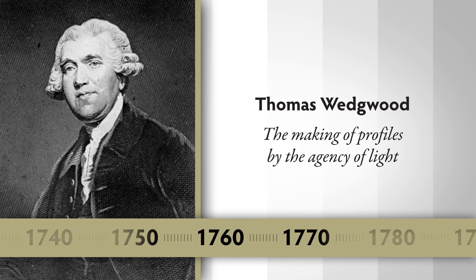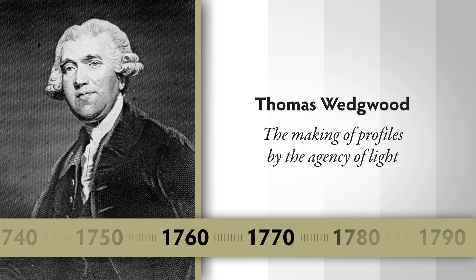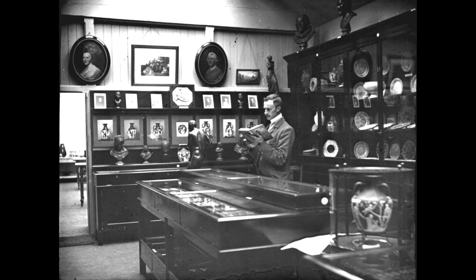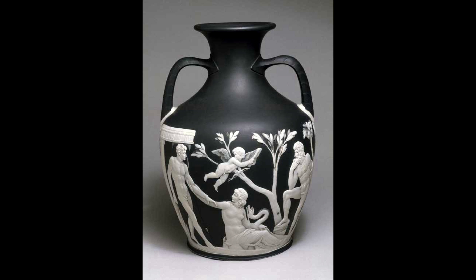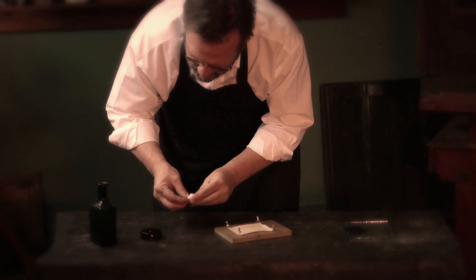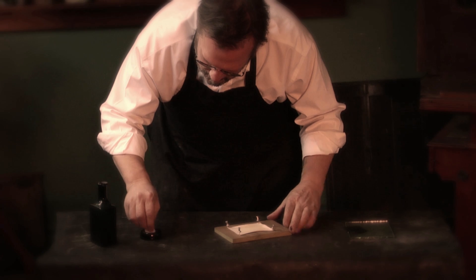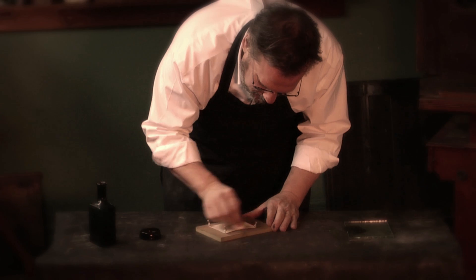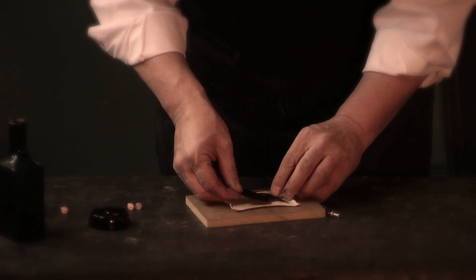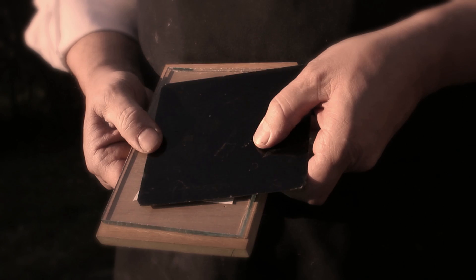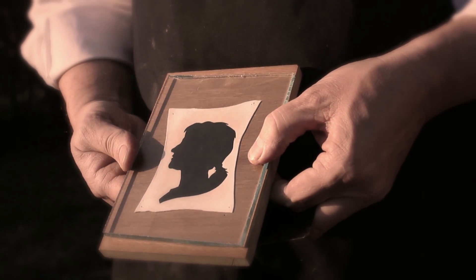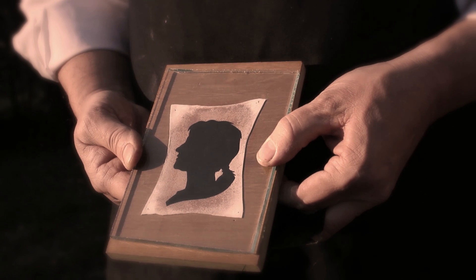Thomas Wedgwood was the son of the famous potter Josiah Wedgwood. The signature of the Wedgwood line was decoration made of silhouettes, so it's no surprise that one of the Wedgwoods would think that light which makes a silhouette could also make an image by the action of light. Wedgwood experimented with silver nitrate, brushing it onto sheets of paper and stretched white leather. He was making images by doing contact prints or photograms — putting an object on top of the sensitive paper or leather and placing it in the sun, where it's easy to see the paper darkening.